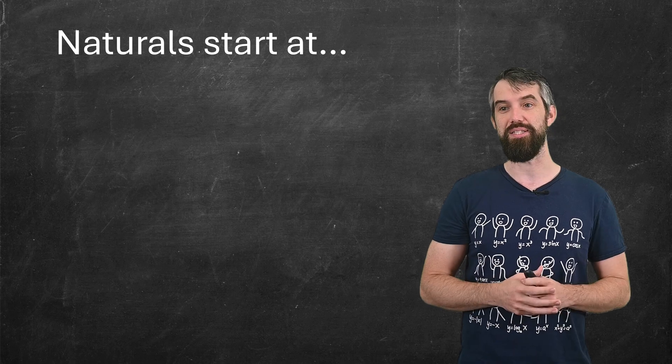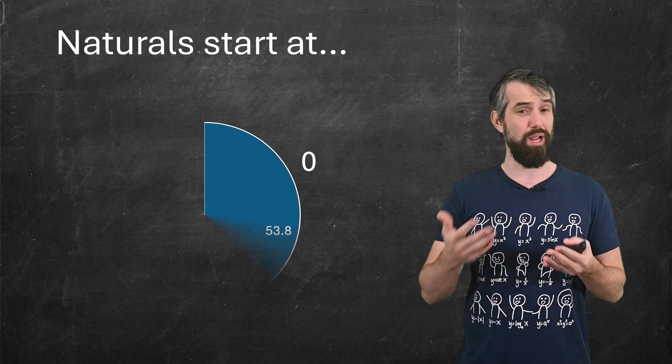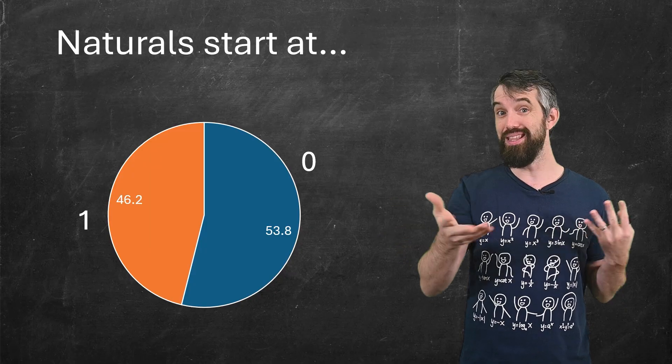I'll give you another example. It blows my mind how even this is. The natural numbers are like one, two, three, four, five, and so on. But do they include zero?